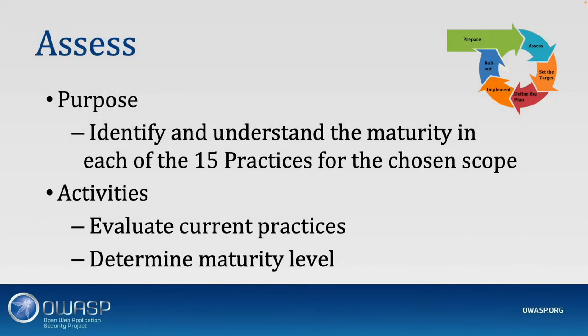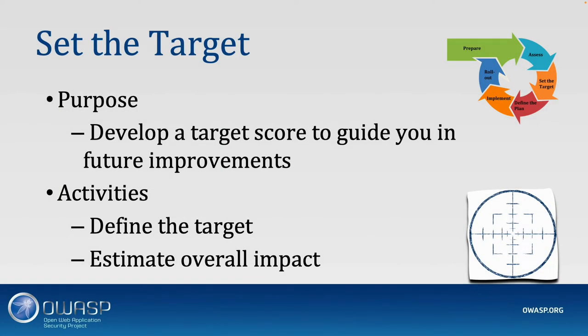The assessment itself — the biggest part of this training — involves going through 90 questions across 15 practices. This typically doesn't take that much time; you talk to everyone or collect answers by email, then fill out the Excel or use the SAMe tool. You'll end up with a score telling you the current maturity level. The next step is to set a target: once you have your current scores, decide which things you're going to improve. Don't pick too many — pick a couple of improvements and define the plan.